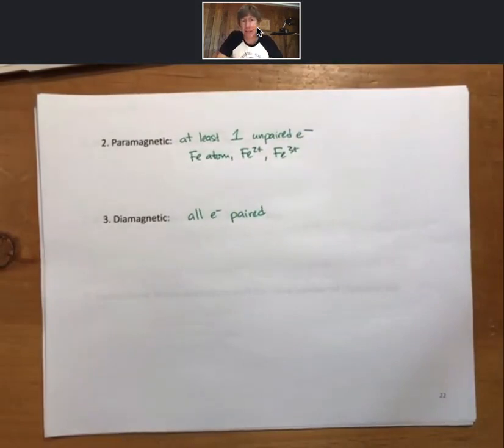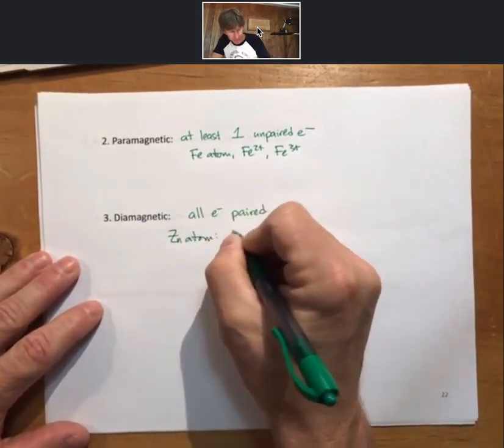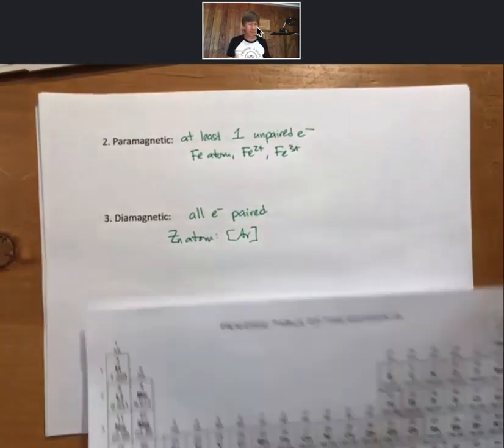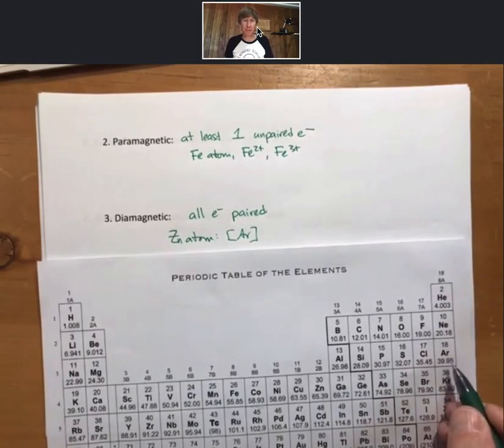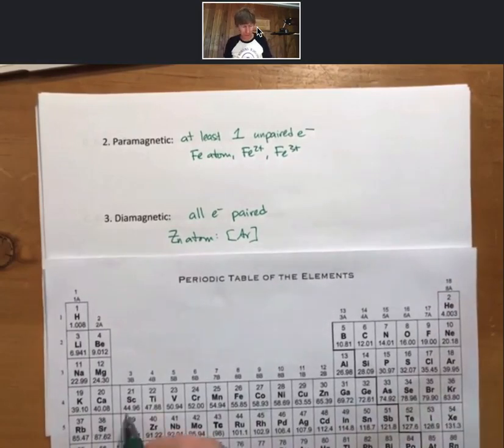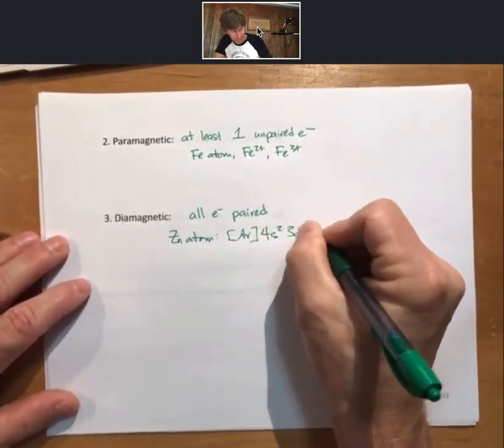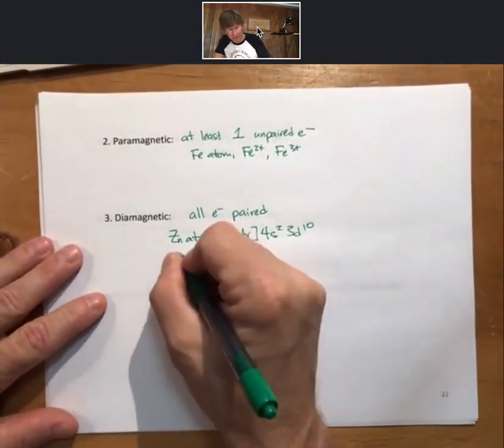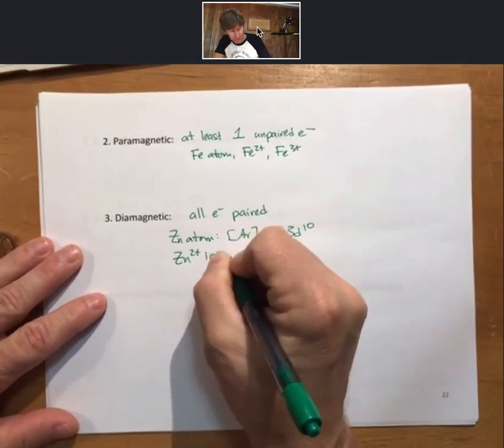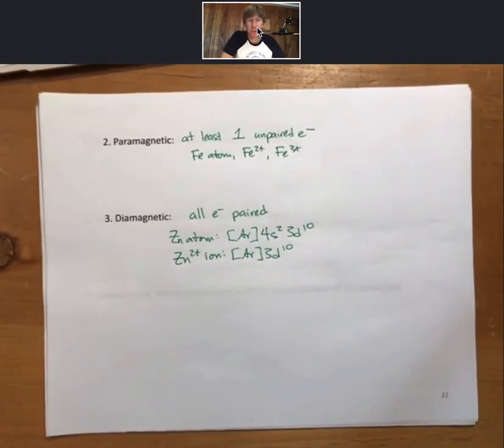While an example of a diamagnetic species would be a zinc atom. Looking at its position on the periodic table, zinc is right here. It will have the same first 18 electrons as argon, 4s2, 3d10, zinc 2 plus, also a diamagnetic species. Because it loses the 4s electrons.